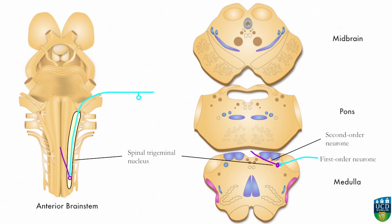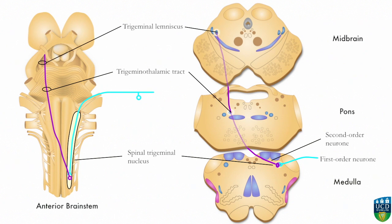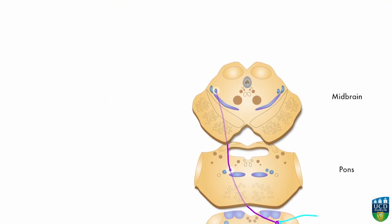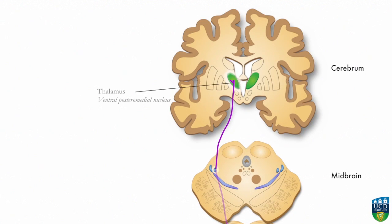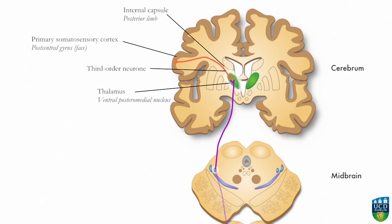The second order neuron crosses over to enter the contralateral trigeminothalamic tract and is joined by other fibers of the trigeminal nucleus to form the trigeminal lemniscus. The axon of the second order neuron terminates in the thalamus, synapsing on third order neurons that then carry the impulse to the appropriate area of the primary somatosensory cortex.